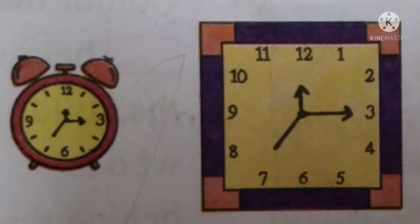Now we will do the activity. The first activity: there are two clocks. One clock is small and one clock is big. Color the box below the smaller clock. This clock is smaller.